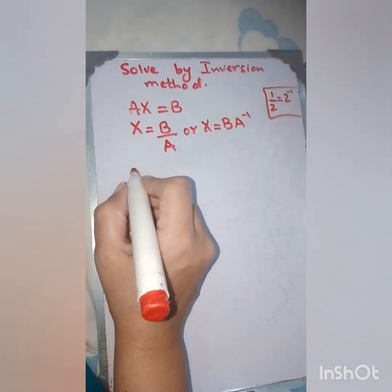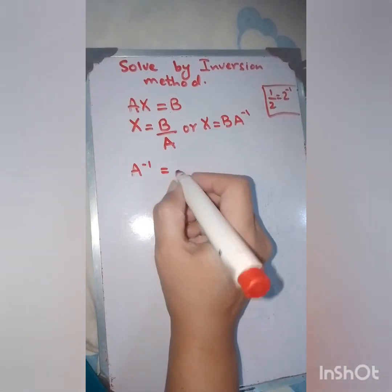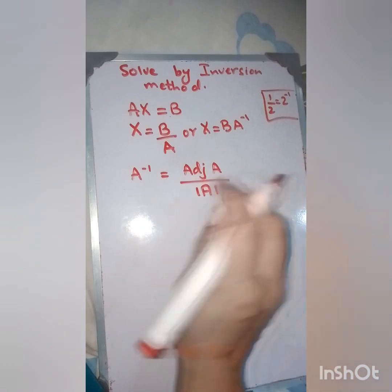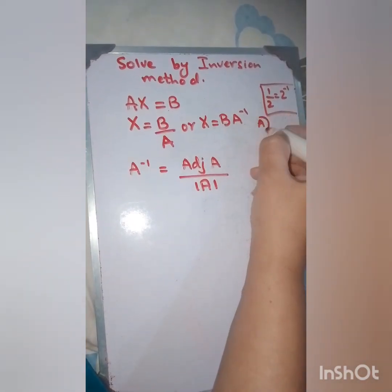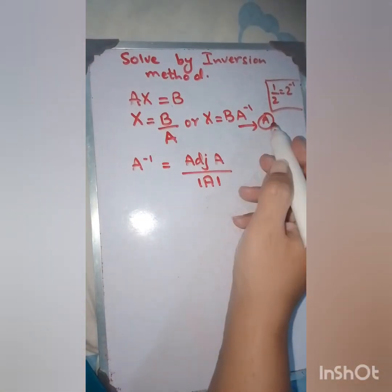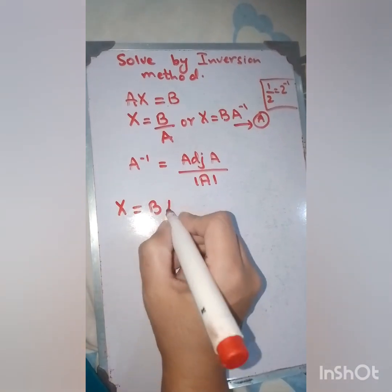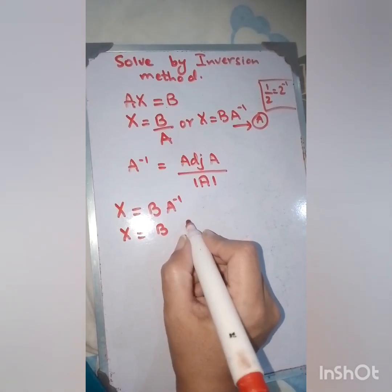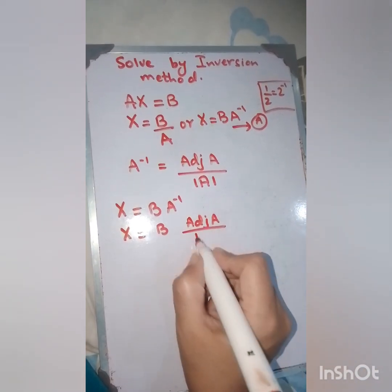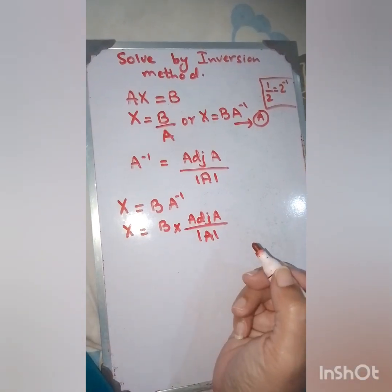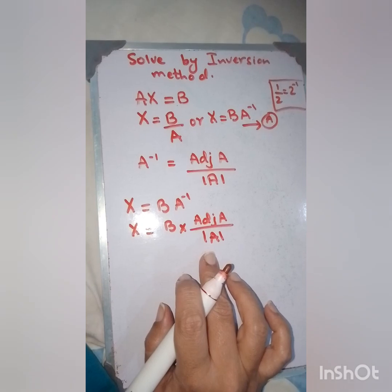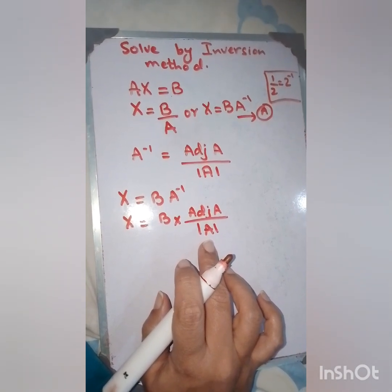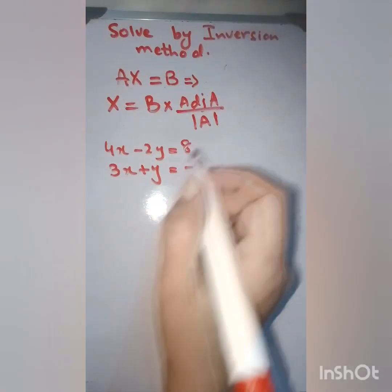We know that A inverse equals the adjoint of A upon the determinant of A. Substituting this into our equation, X equals A inverse times B becomes X equals adjoint of A upon determinant of A, multiplied by B. This is the core formula we are going to use to simplify the system of equations using both the inversion method and Cramer's rule.